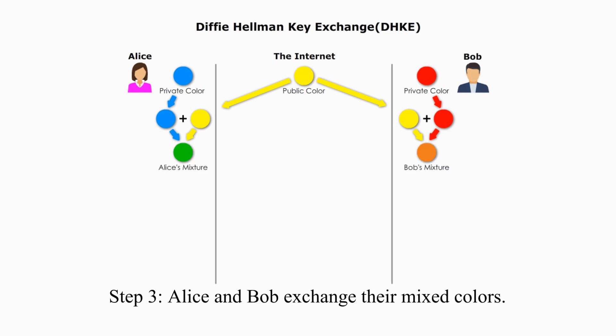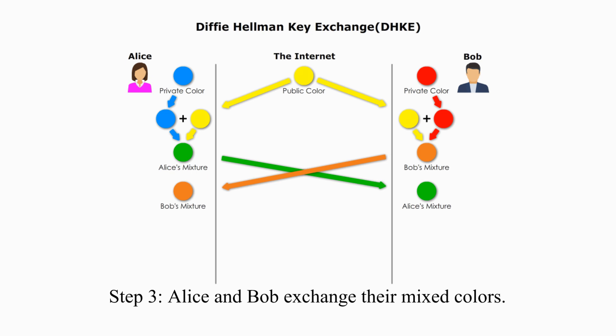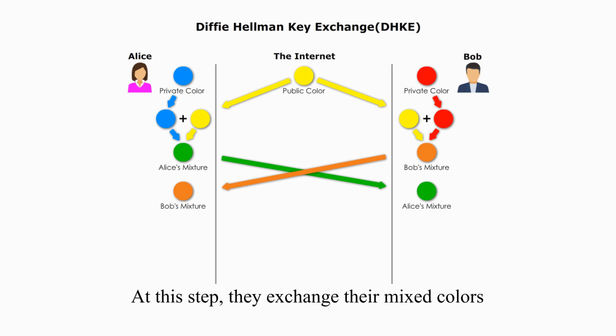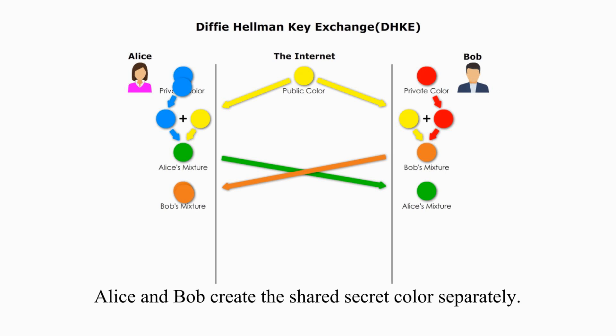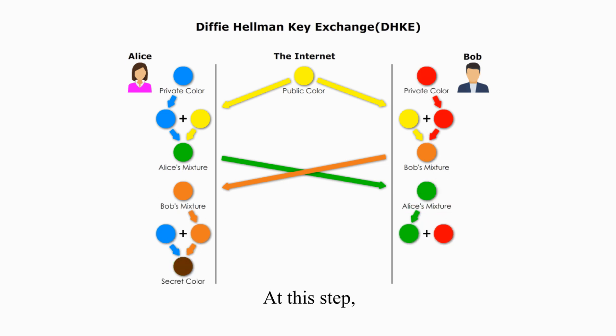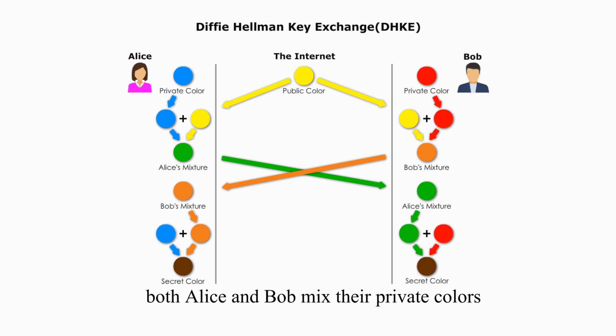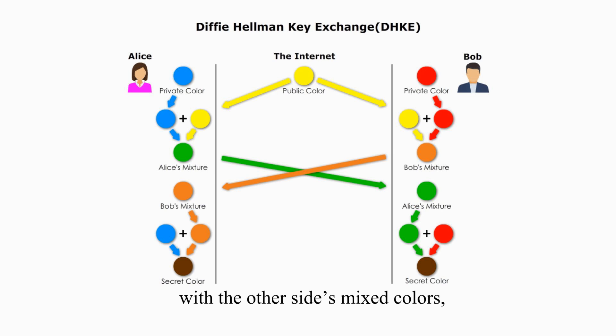Step 3. Alice and Bob exchange their mixed colors over an insecure communication channel. Last step, Alice and Bob create a shared secret color separately. At this step, both Alice and Bob mix their private colors with the other side's mixed colors, and they acquire the secret color brown.